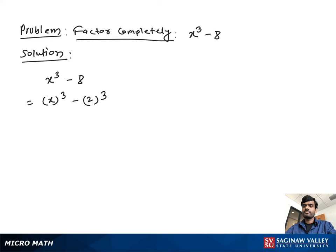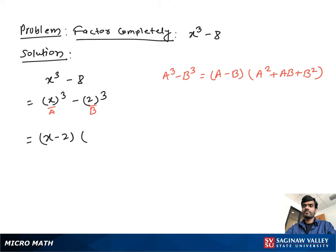It looks like a special case a³ minus b³ form. We know a³ minus b³ is equal to (a minus b) times (a squared plus ab plus b squared). If we suppose x as a and 2 as b, then we can write (x minus 2) times (x squared plus 2x plus 4).